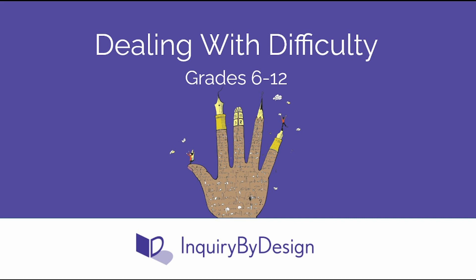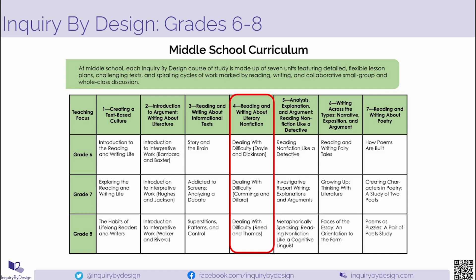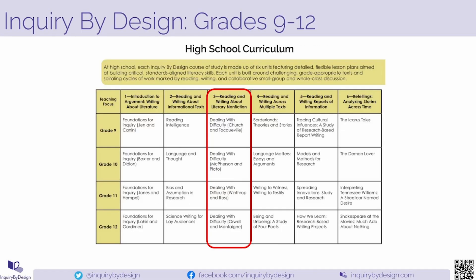Dealing with Difficulty is a unit that we have in all grade levels from 6th through 12th. In our middle school curriculum it'll be the fourth unit and in high school the third, in both cases directly following the informational texts unit. As you begin to review this unit you'll immediately notice a lot of similarities with that informational text unit in terms of structure and some of the work students do in these sessions.